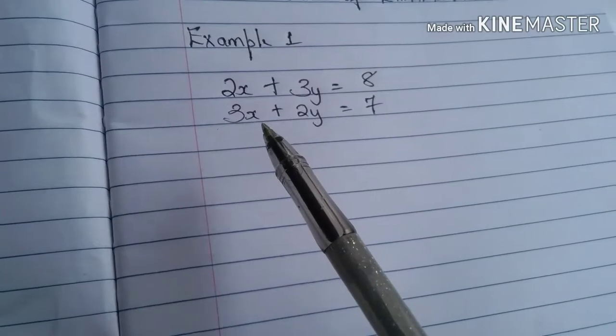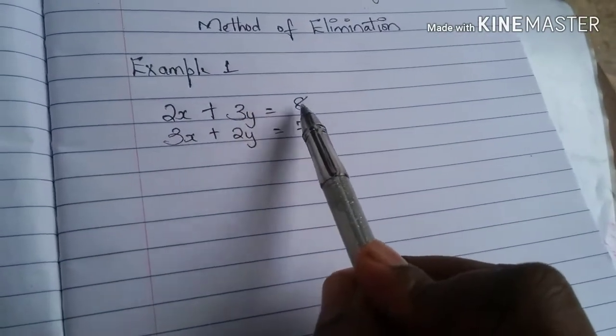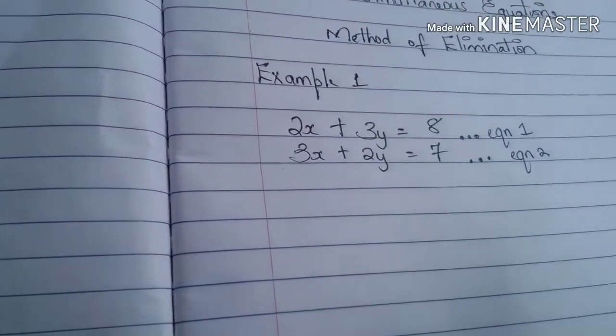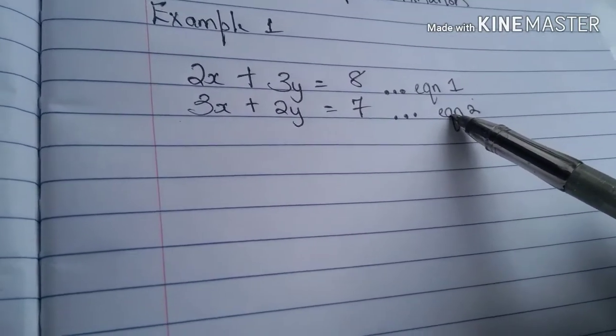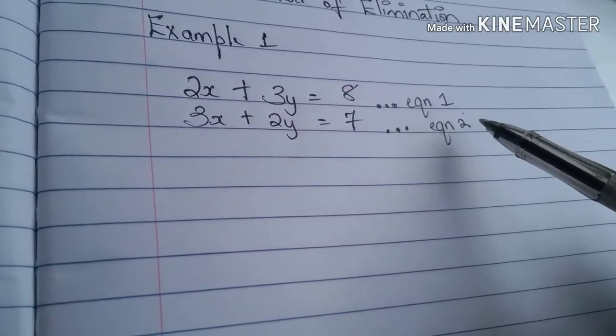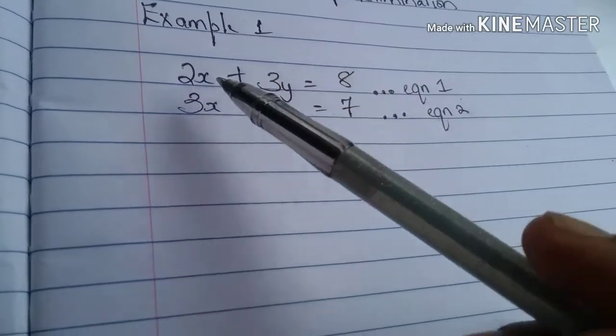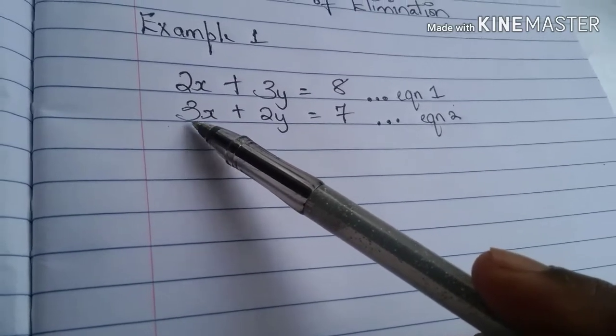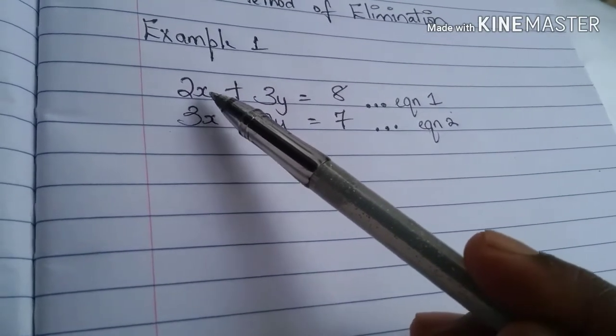So what I'm going to do is multiply, let me name these equations. So I'm going to call this equation equation 1 and our second equation equation 2. So in order for us to get the coefficient of x to be the same, what I'm going to do is to multiply equation 1 by the coefficient of x in equation 2. And we know that the coefficient of x in equation 2 is 3. So we are going to be multiplying everything in our equation 1 by 3.